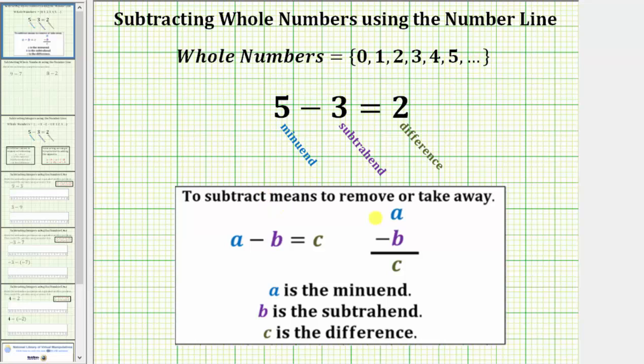To subtract means to remove or take away. We can write subtraction problems horizontally or vertically. Both are read A minus B equals C, where A, the quantity we begin with, is called the minuend. B, the quantity we subtract or remove, is called the subtrahend, and C, the result of the subtraction, is called the difference.